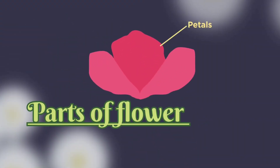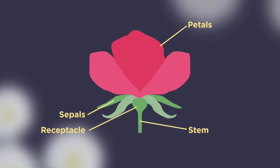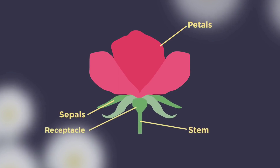Starting with the sepals and petals — sepals and petals help to protect the flower and can be brightly colored so that they can attract insects and pollinators. The stem and receptacle connect the flower to the rest of the plant.